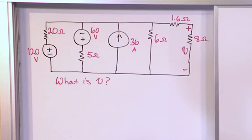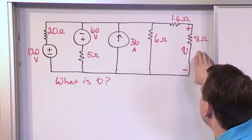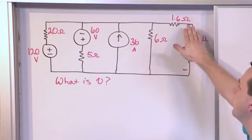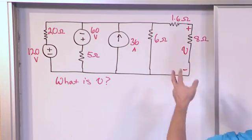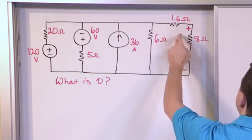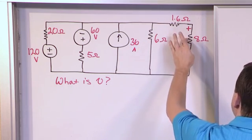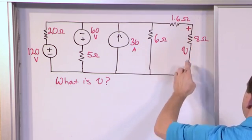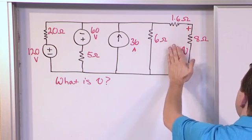Because we're trying to find the voltage across the 8 ohm resistor, we really want to leave this part of the circuit alone. You might be tempted at first glance—you have two resistors here in series, you can add them together, creating a single resistor, and then you have these guys in parallel, you could simplify.